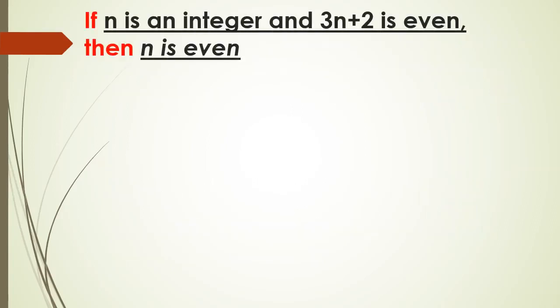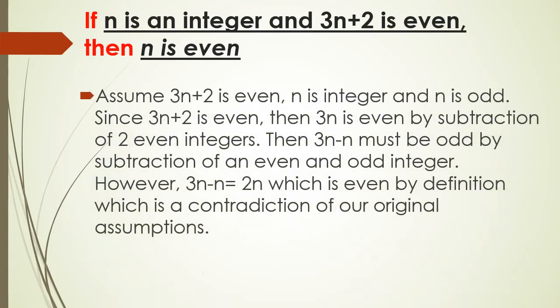Example: if N is an integer and 3N + 2 is even, then N is even. We assume that 3N + 2 is even, which is our P, and N is an integer, and our Q is that N is even. So the negation is: N is odd.